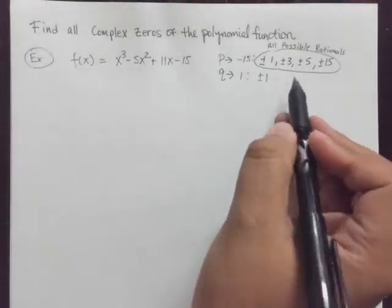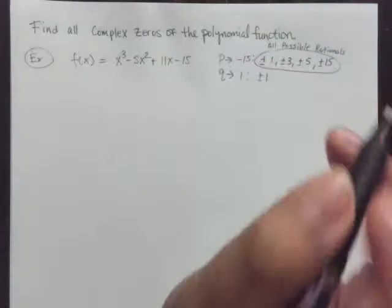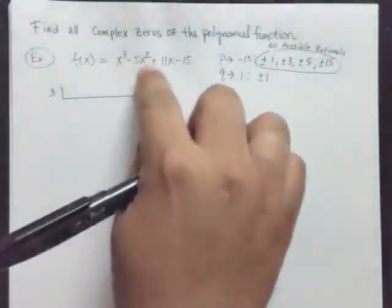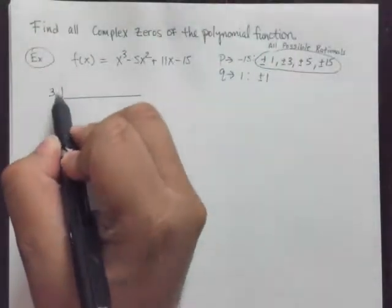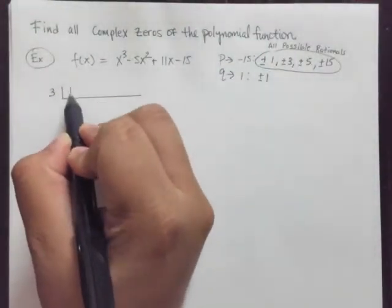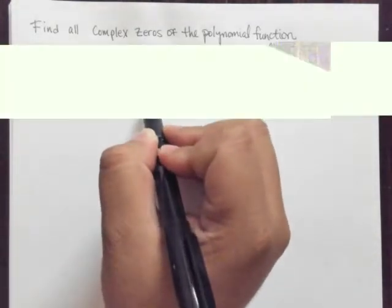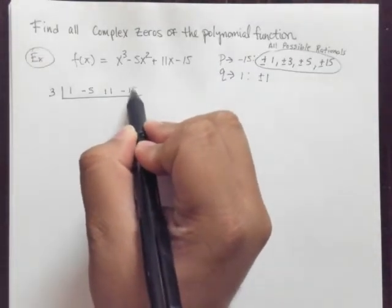So here we are now. I know right now that the 1 that works is 3. 3 happens to be a zero of this polynomial function. So I'm going to put 3 on the outside. I'm going to put 1, negative 5, 11, and negative 15.